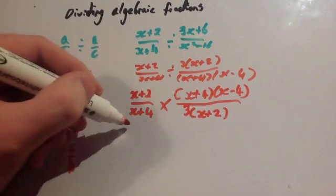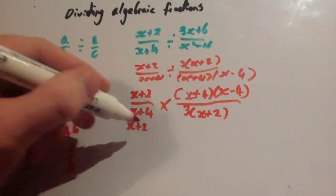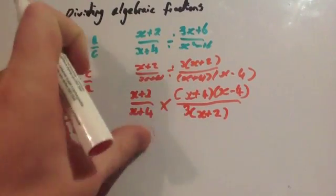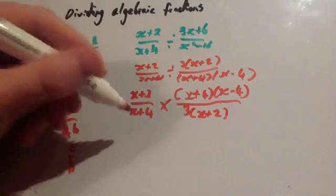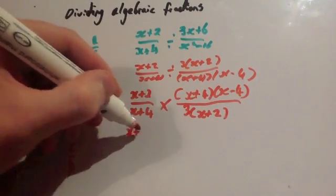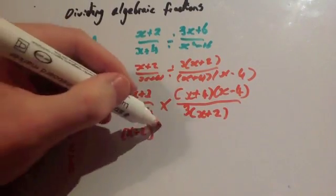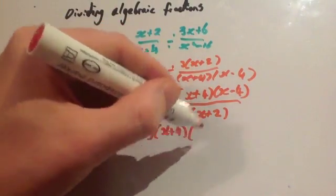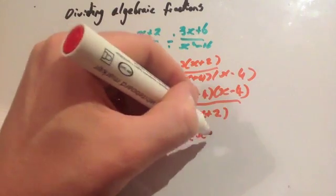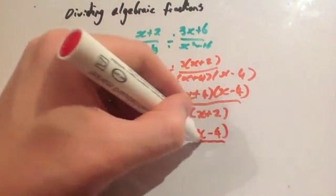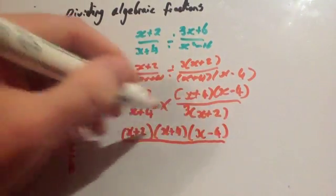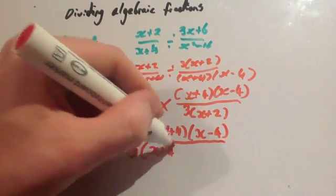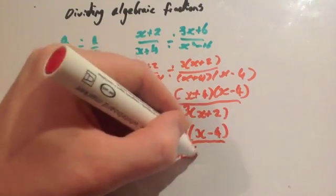Now we're going to do the multiplication. So you're going to get — I'll give us a little more room here — (X plus 2)(X plus 4)(X minus 4), remembering to put them in brackets, all over 3(X plus 4)(X plus 2).